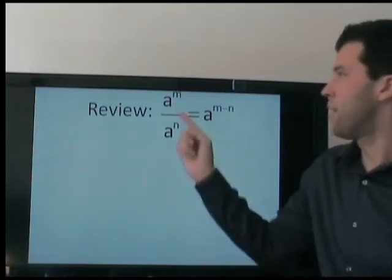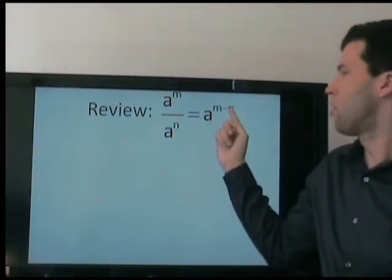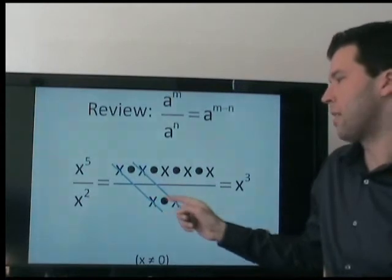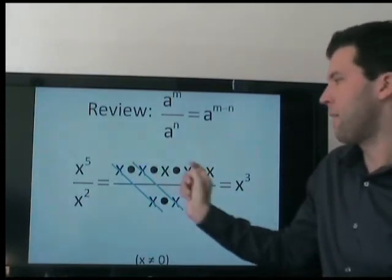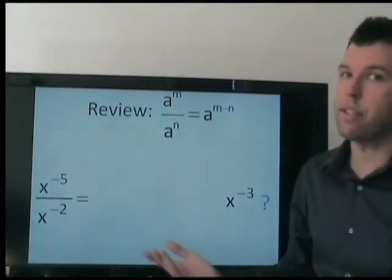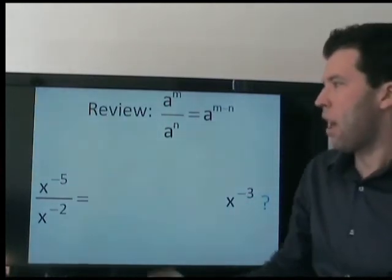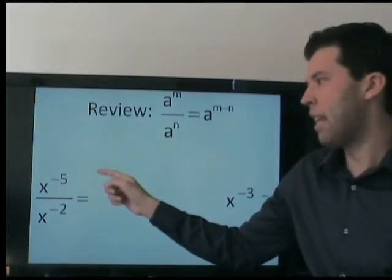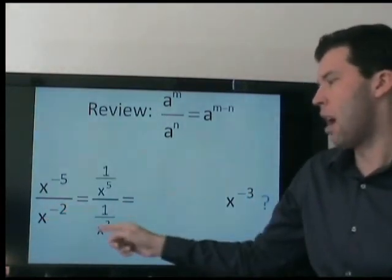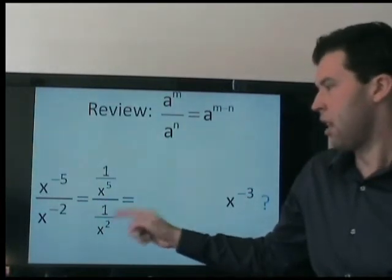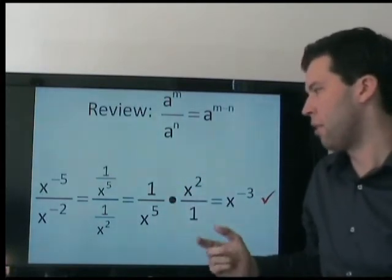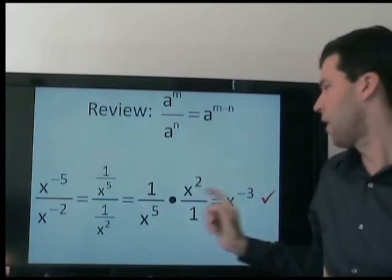Hopefully you also learned that when we divide powers with the same base, we subtract the bottom exponent. This is very obvious: if we have 5 x's in the numerator and 2 x's cancel, 5 minus 2 is 3. What's not obvious is when we have negative exponents. Do we still subtract? Yes. Well, what does this mean? We're dividing by x five times in the numerator and dividing by x two times in the denominator. Remember that dividing by a fraction is the same as multiplying by its reciprocal. So now we have positive exponents, and we know that we subtract: 2 minus 5 is negative 3.